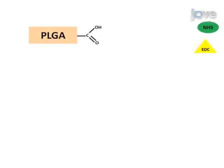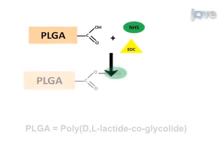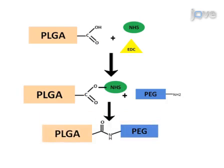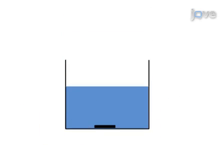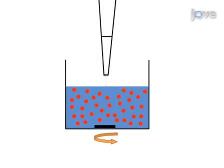This is accomplished by first performing an EDC NHS reaction to generate a PLGA PEG copolymer. The PLGA PEG copolymer is then used to generate nanoparticles encapsulating the drug or cargo of interest through nanoprecipitation.